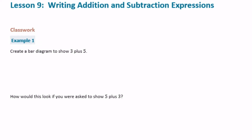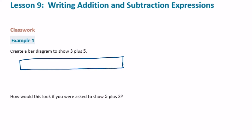Sixth grade module 4, lesson 9, classwork example 1: create a bar diagram to show 3 plus 5. A bar diagram looks like a tape diagram. We have 3 plus 5, which equals 8, so I'll split it into 8 and outline the 3 in a different color to show 3 plus 5, with the whole thing being 3 plus 5.